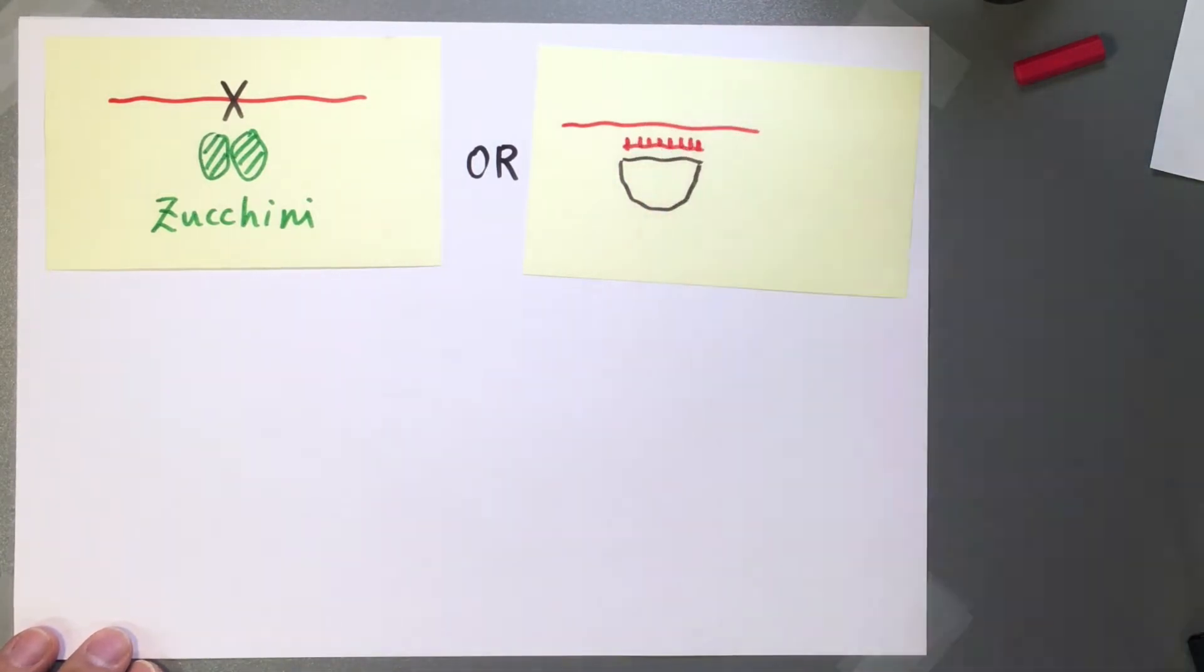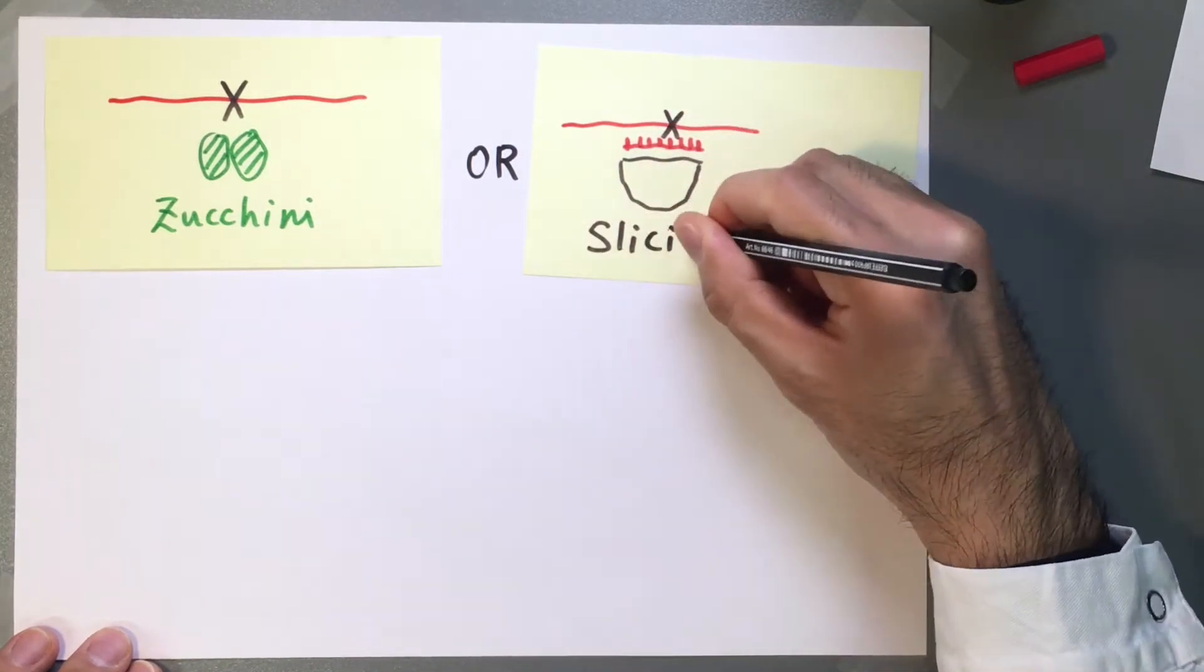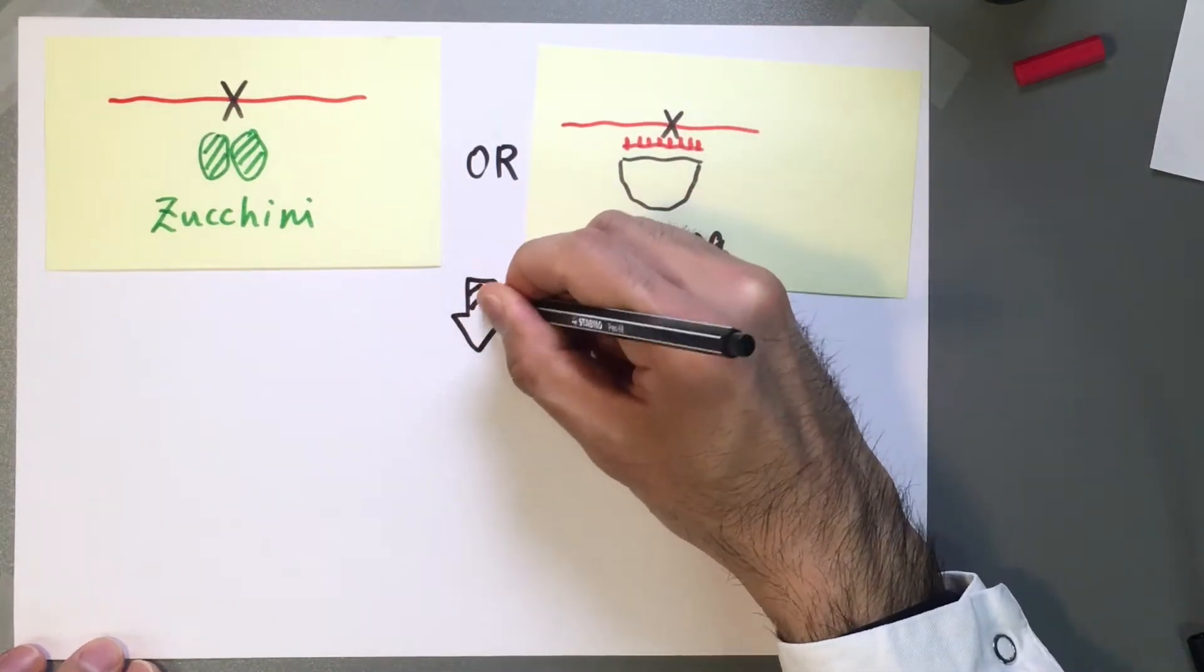These endonucleolytic cleavages generate pre-piRNA, which is loaded into an argonaute protein.